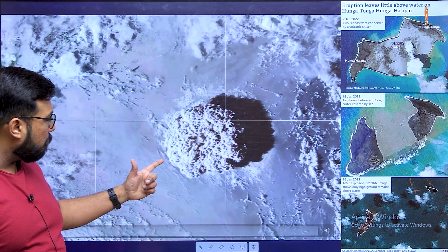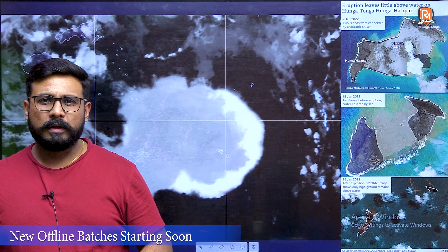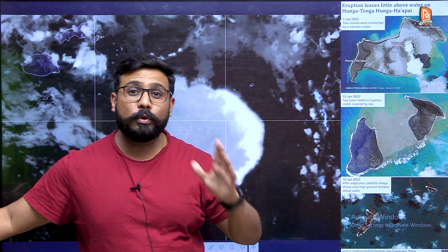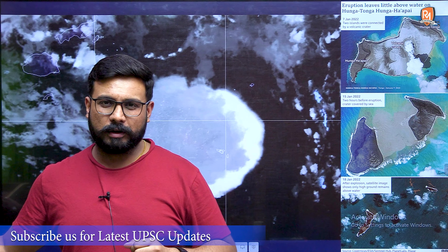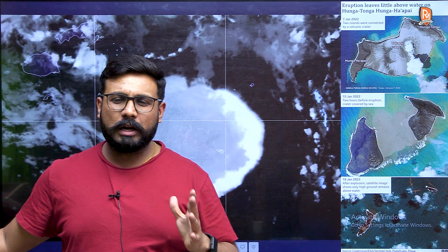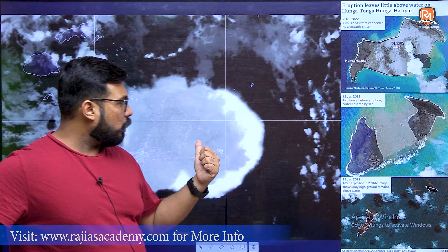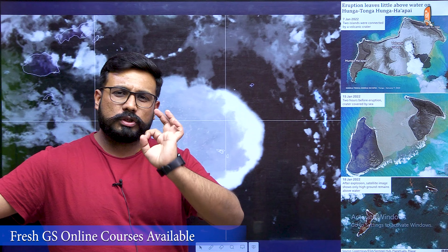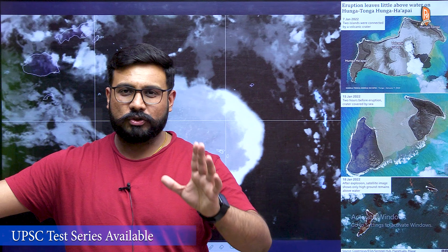The Tonga volcanic eruption, however, was a submarine volcanic eruption, important for two reasons. First, the 1883 Krakatoa volcanic eruption is famous for being the loudest natural sound ever recorded in human history. The Tonga volcanic eruption of January 2022 produced the second loudest ever recorded naturally produced noise.